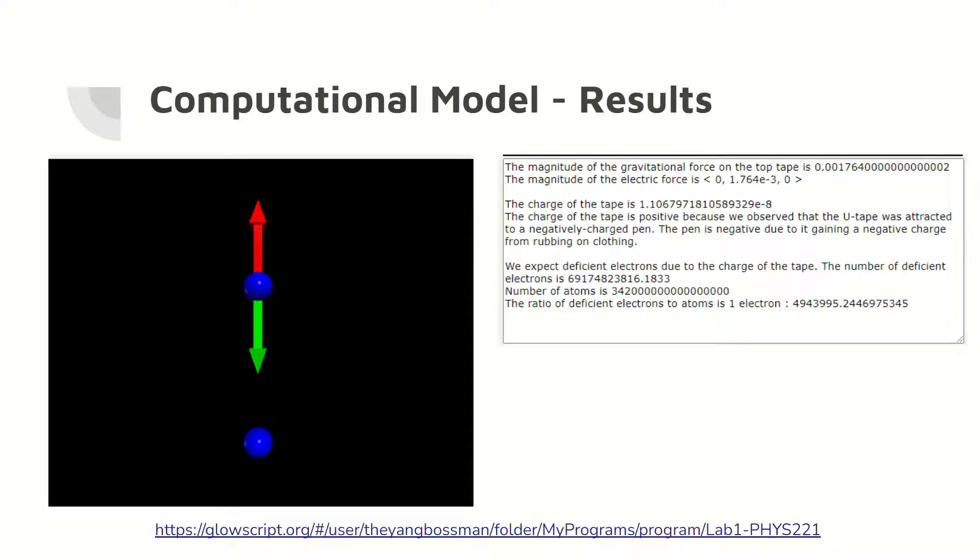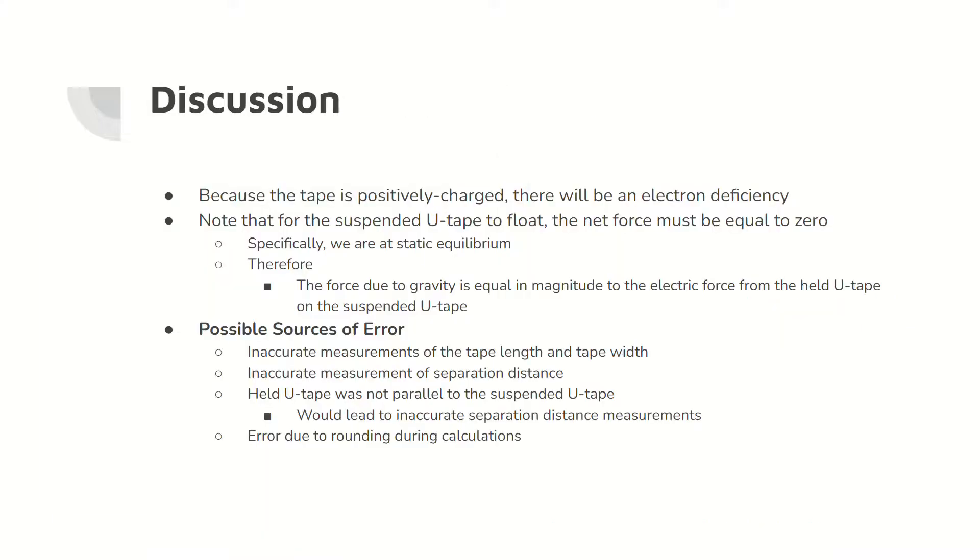Here are the results of the code. As stated, there is an electron deficiency on the surface of the tape, which is indicated by the positive charge. Furthermore, the net force is zero for the suspended u-tape to float. Because the net force is zero on the floating u-tape, the magnitude of the electric force equals the magnitude of the gravitational force on the tape.